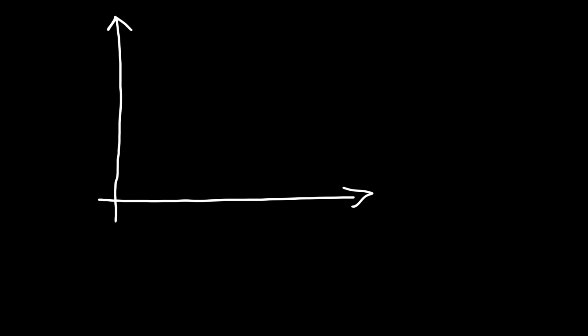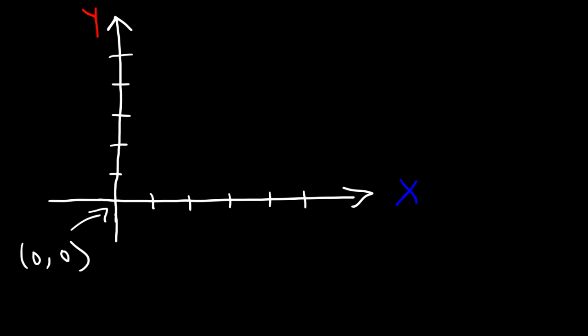First, we need to know what exactly is a coordinate system and what it's used for. A coordinate system is used to locate points, and it is formed by the intersection of two number lines — the x-axis and the y-axis. The horizontal line is known as the x-axis, and the vertical line is known as the y-axis. There are numbers on each of these lines. They intersect at their zero points, and this point is known as the origin. It's (0, 0).